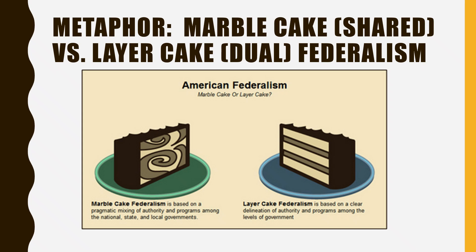The layer cake approach, maybe a more traditional constitutional law approach, is based on a delineation or separation of the types of things that the national government does versus what the state government does. We focus on what are the powers of the US government, what areas is the US government ultimately most in charge of versus what do the states primarily do. The marble cake approach is more what a public policy specialist would focus on, while the layer cake approach is more what a constitutional law student or researcher would focus on.